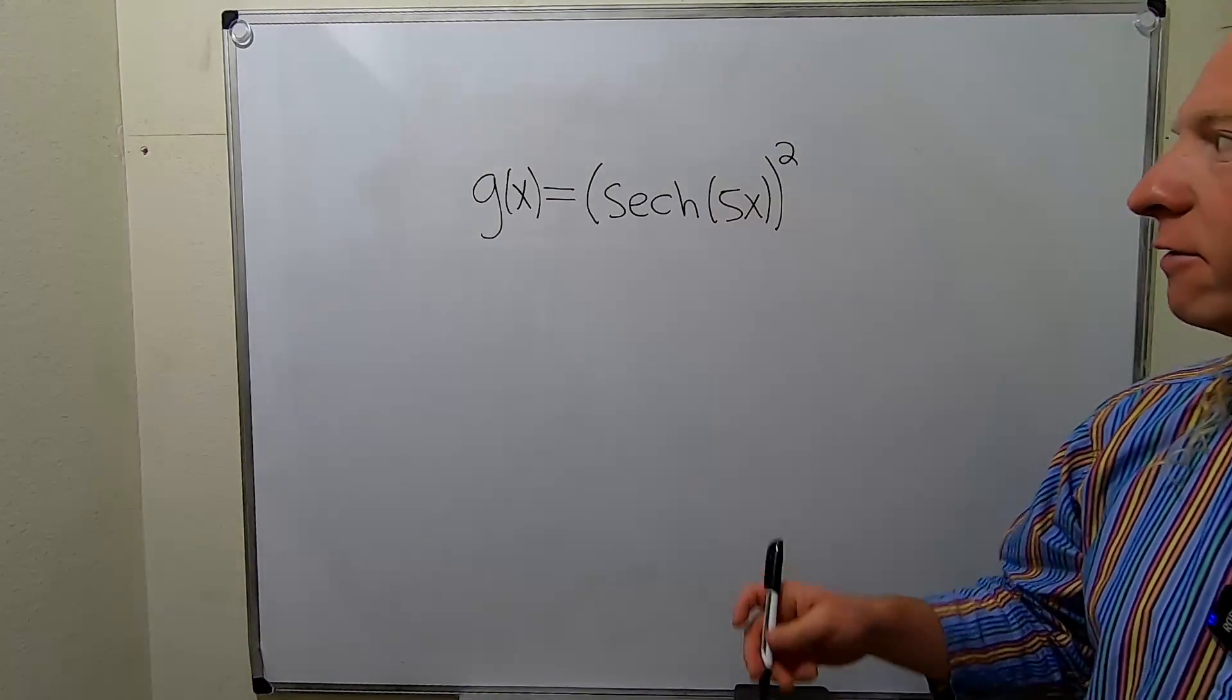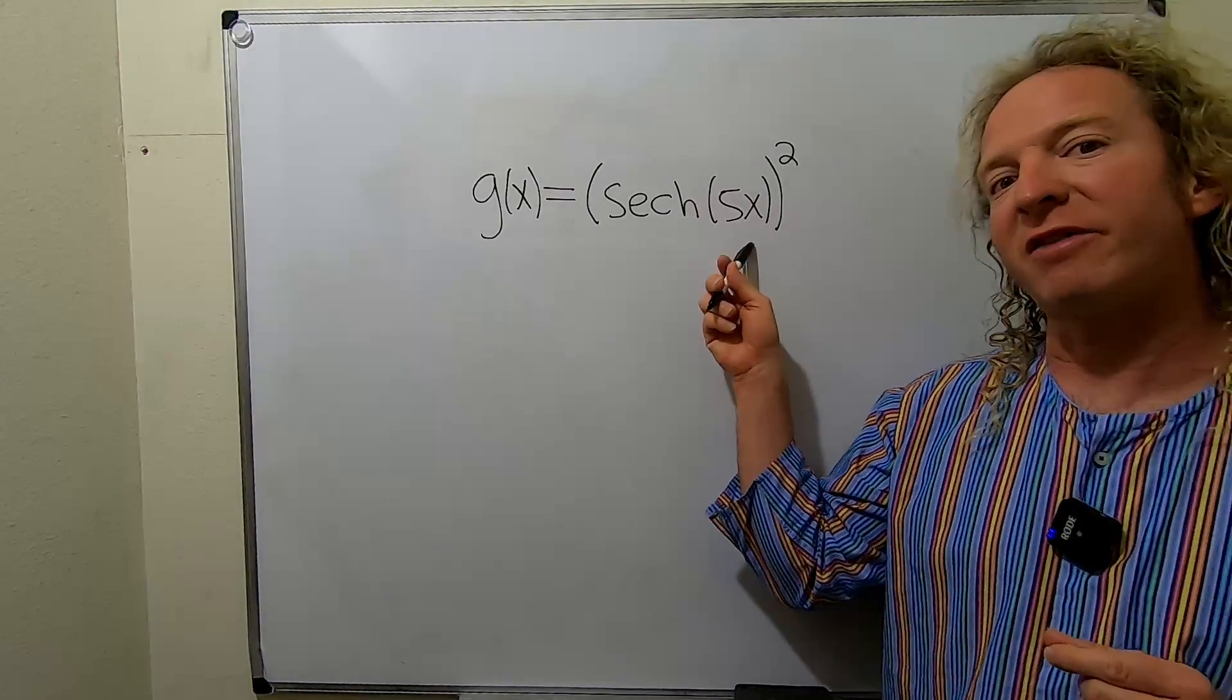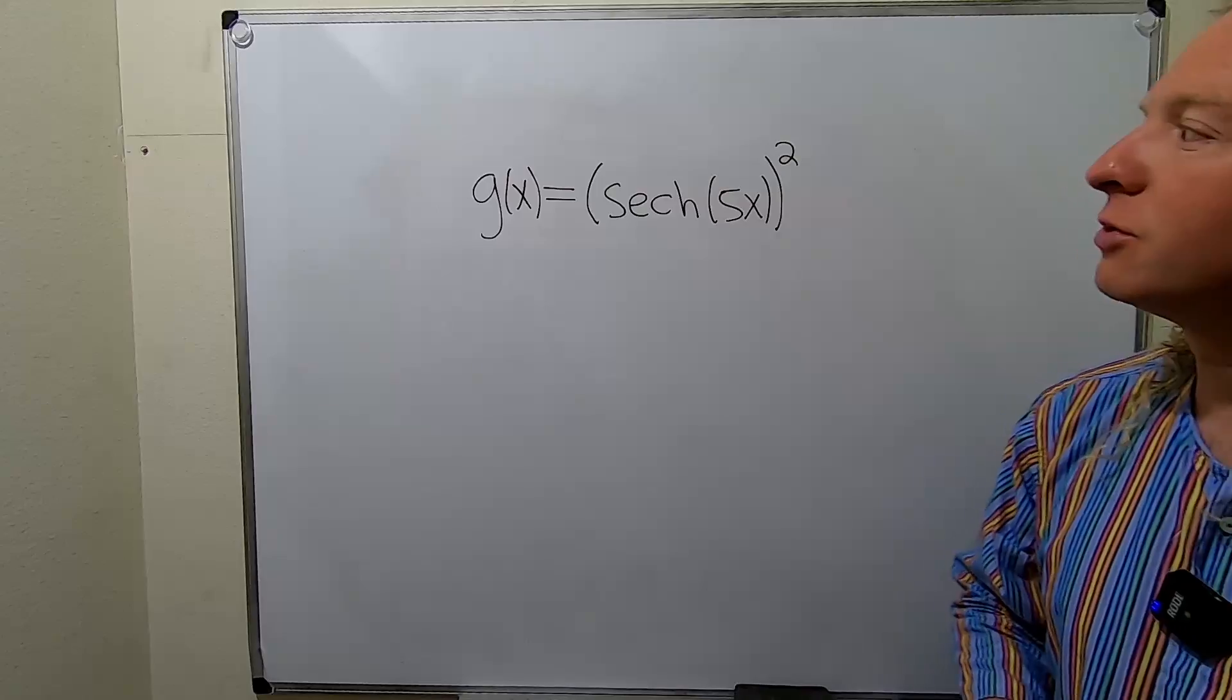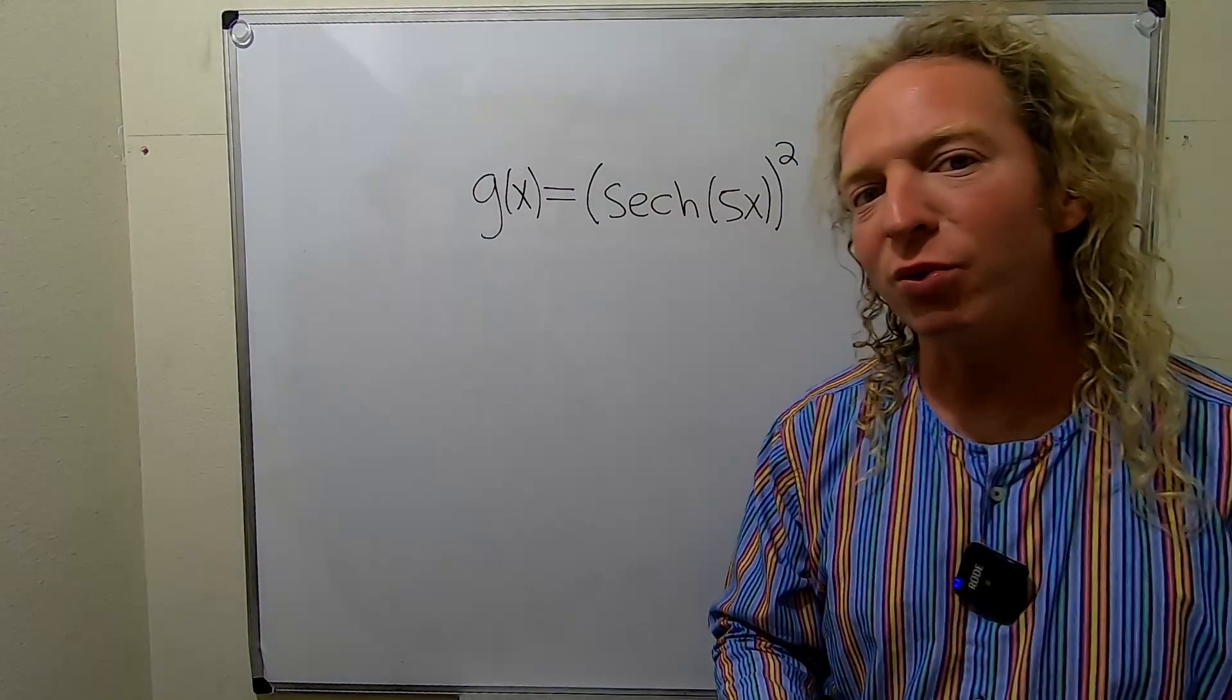In this problem, we're going to find the derivative of the hyperbolic secant of 5x squared. So let's do this. We're going to use the chain rule.